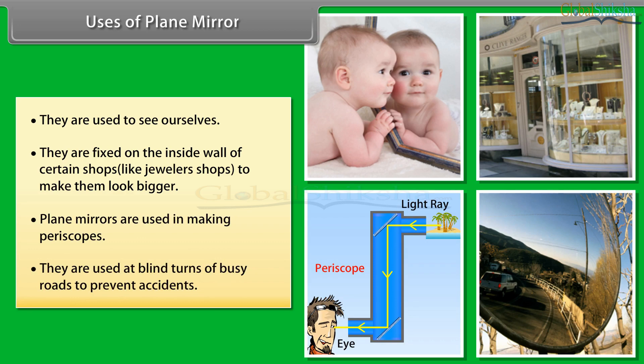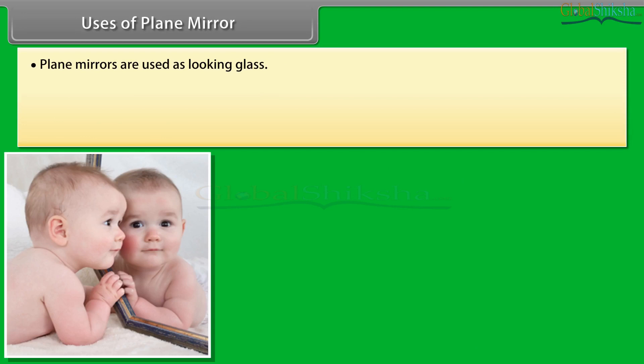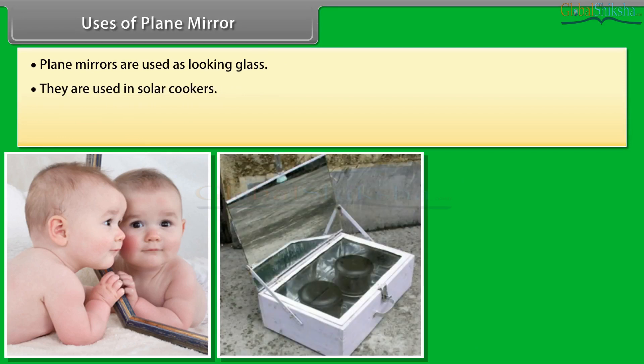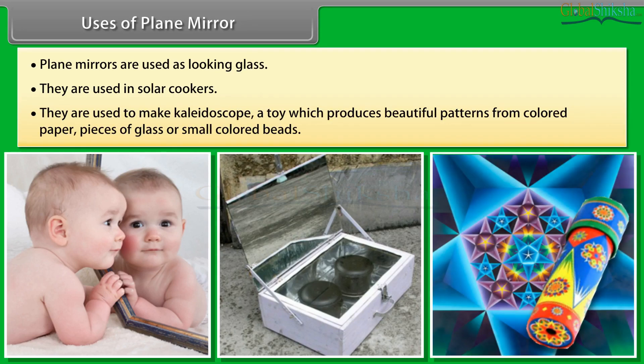They are used at blind turns of busy roads to prevent accidents. Plane mirrors are used as looking glass. They are used in solar cookers. They are used to make kaleidoscope, a toy which produces beautiful patterns from colored paper, pieces of glass or small colored beads.